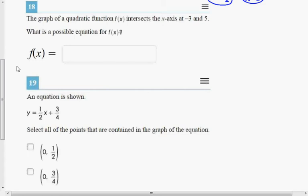We're going to look at 18 and 19 here. Number 18 says the graph of a quadratic function f of x intersects the x-axis at negative 3 and positive 5. What is a possible equation for f of x?